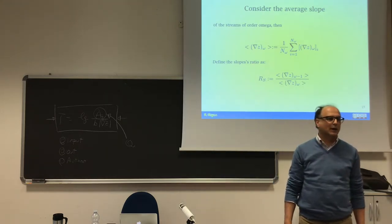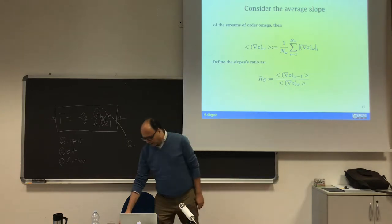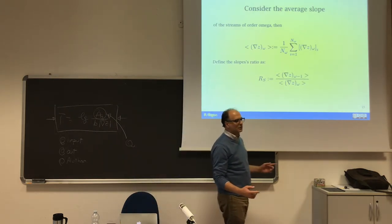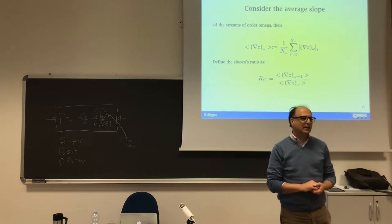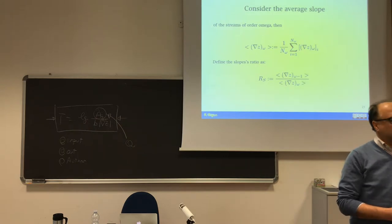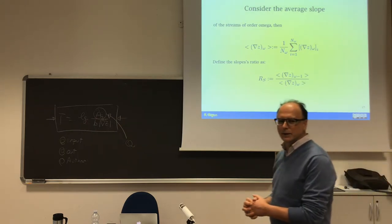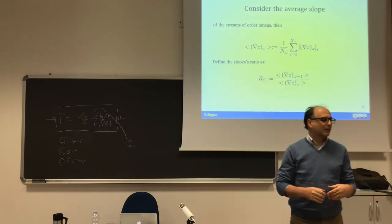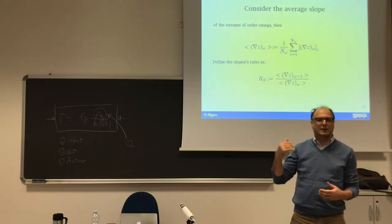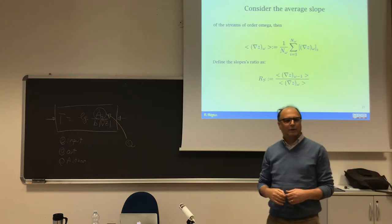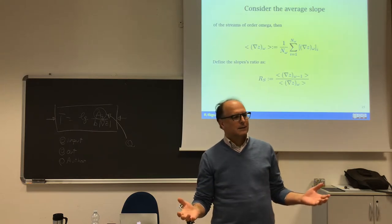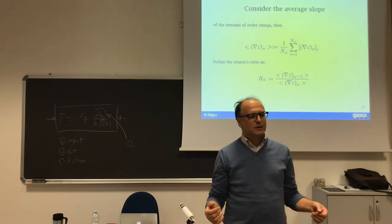We can do the same for the length of the streams. The length law is particularly important, as I will say in a few minutes. We can define the length ratio RL, which is the length of a stream of a certain order divided by the length of a stream of order omega minus one. It turns out that this length ratio is equal to two.